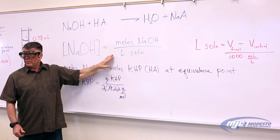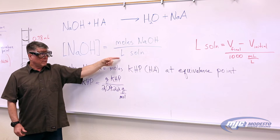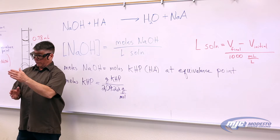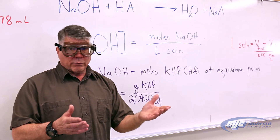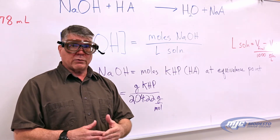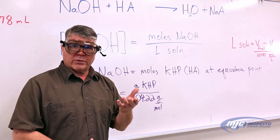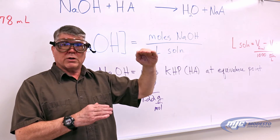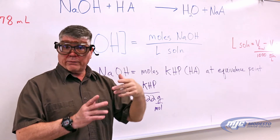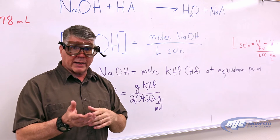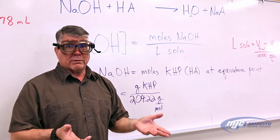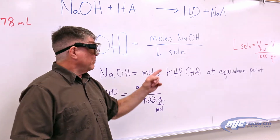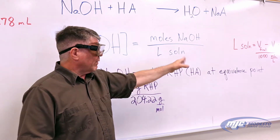The only other thing we need to get our answer for the first part is the liters of solution — how much sodium hydroxide we added from the burette. It's really pretty easy: we measure that volume with the burette. All we do is record the initial volume and the final volume; the difference between those two is the volume added. Because the burette reads in milliliters and we need liters, we divide by a thousand.